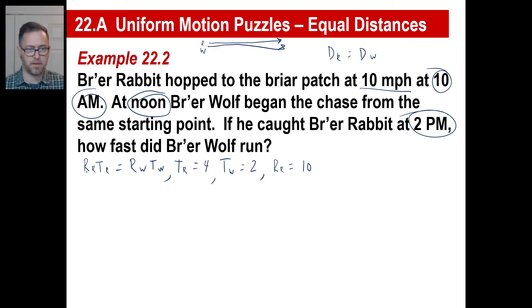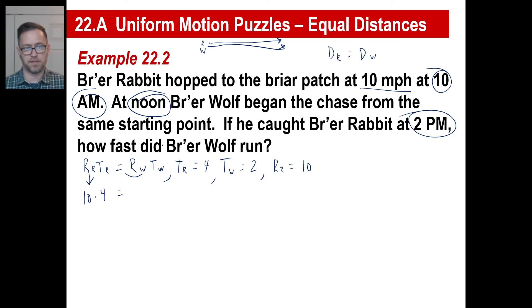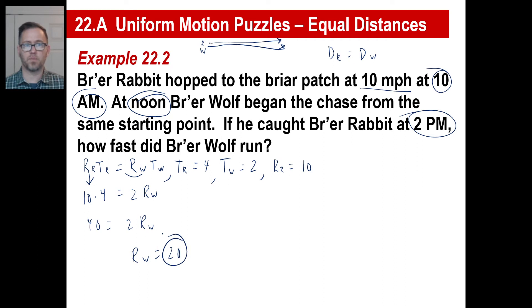Now we just substitute. Rate of the rabbit is 10, time of the rabbit is 4 — that equals the rate of the wolf (unknown) times the time of the wolf, which is 2. They're asking how fast the wolf ran. So we get 40 equals 2 times the rate of the wolf — the rate of the wolf is 20.